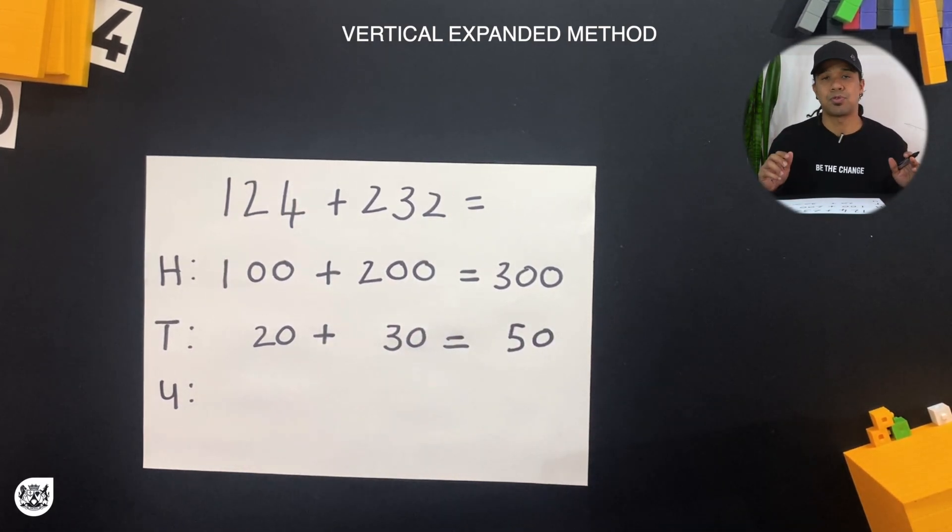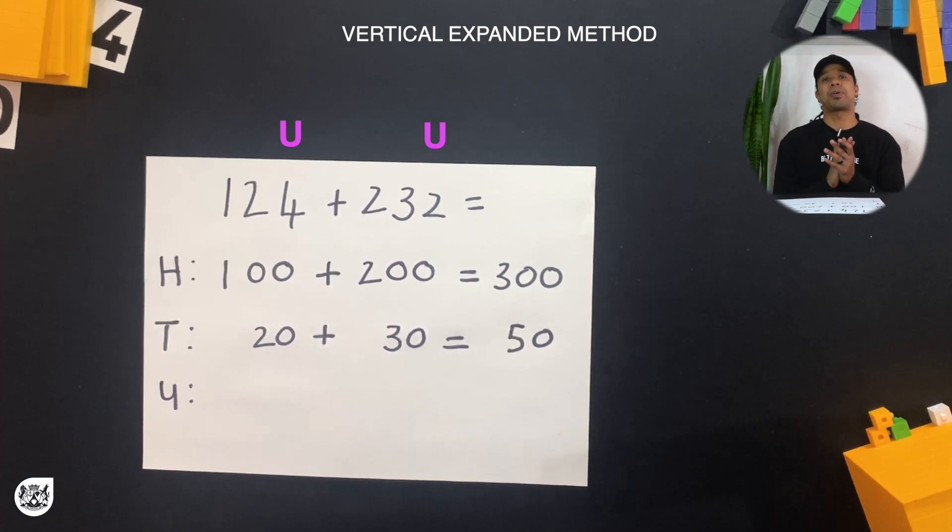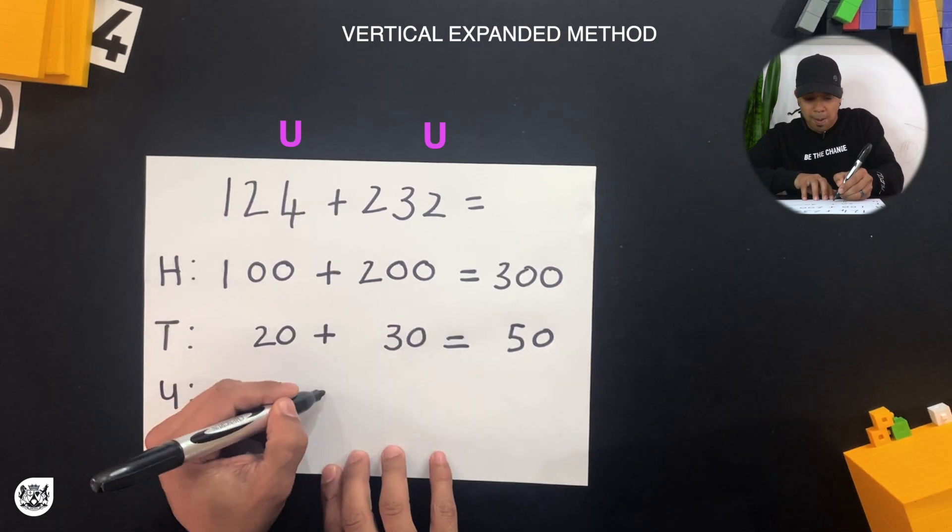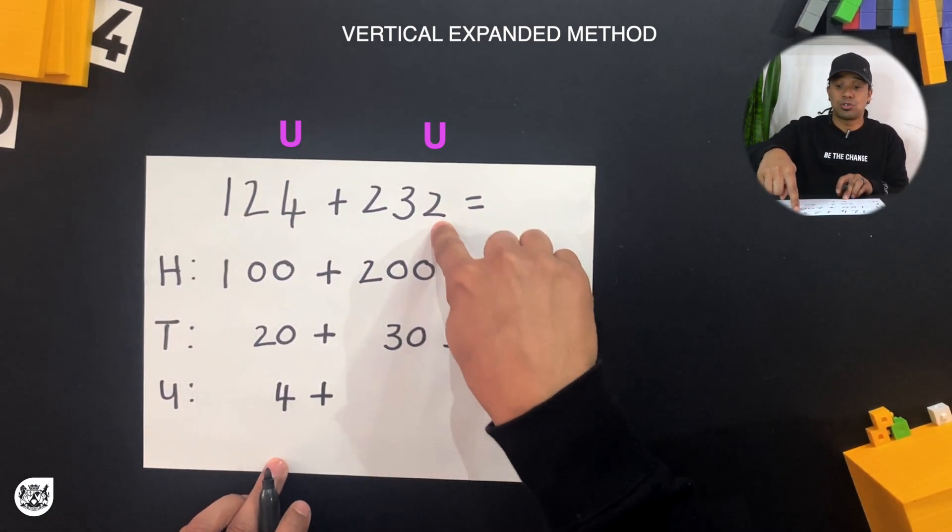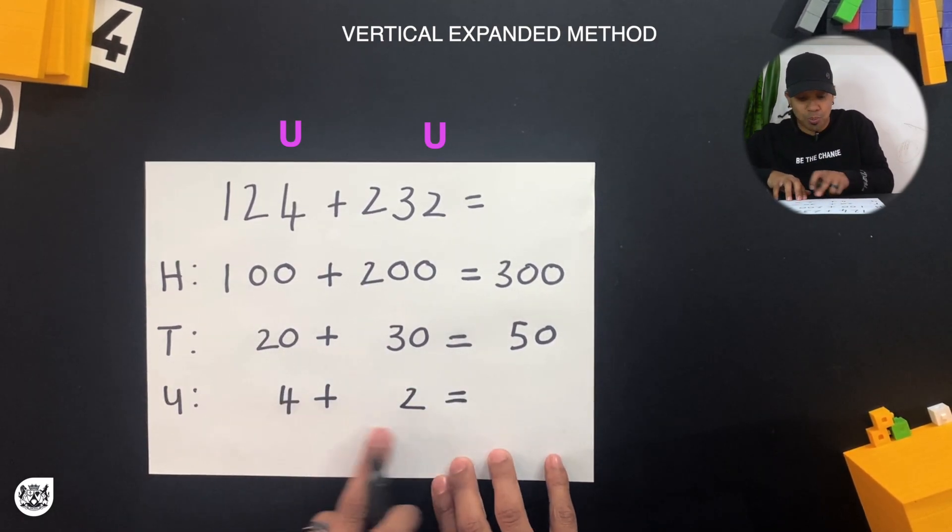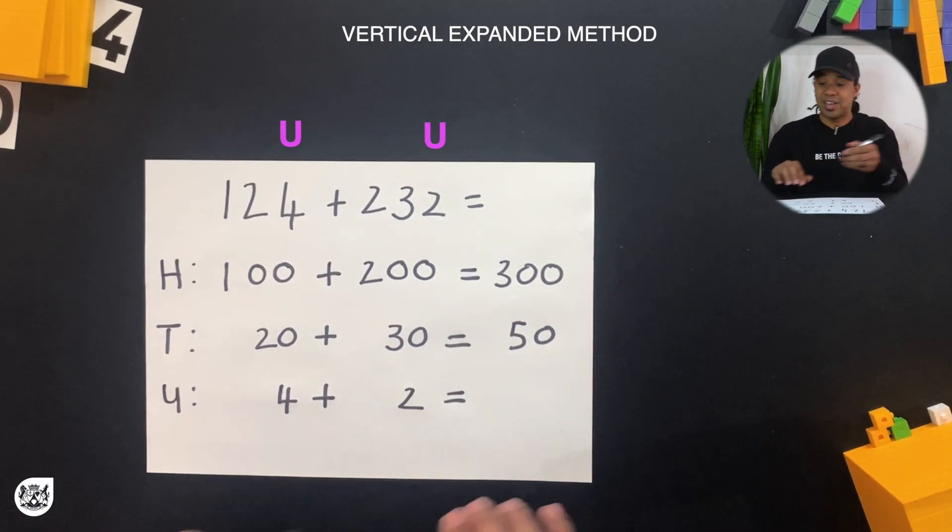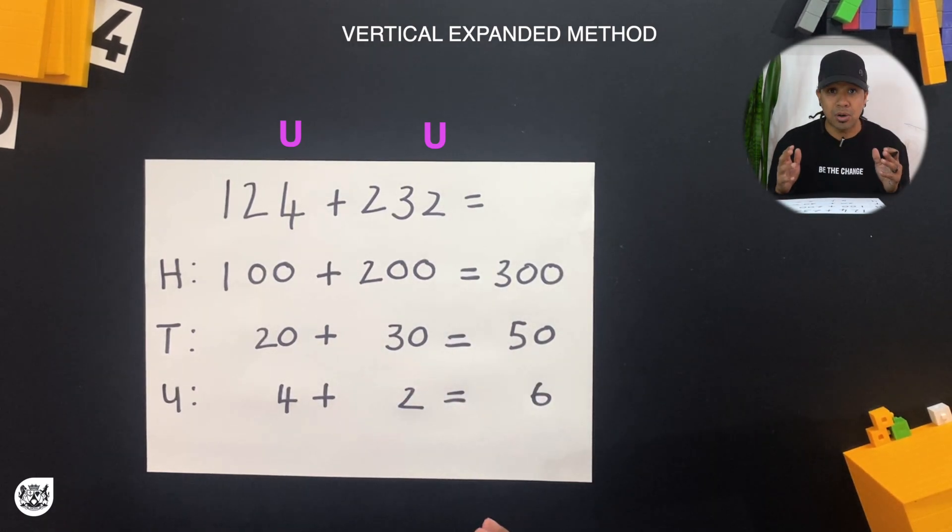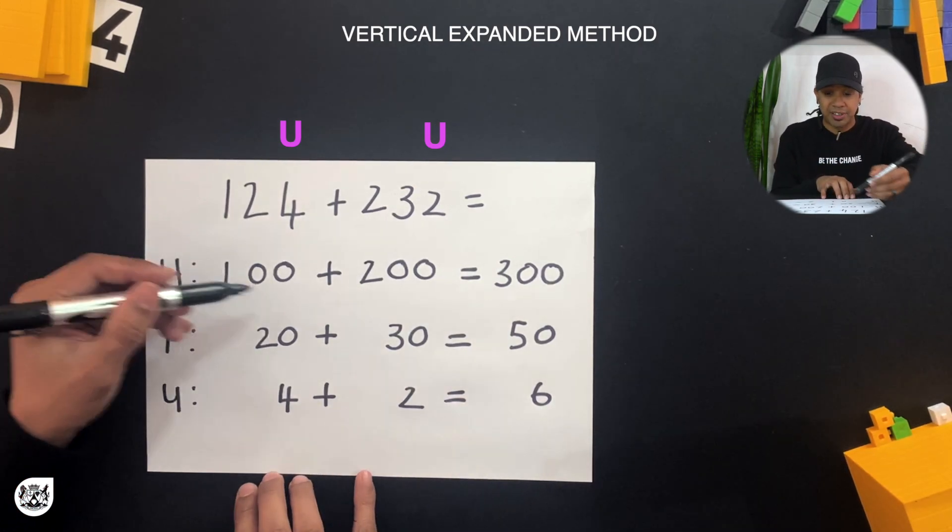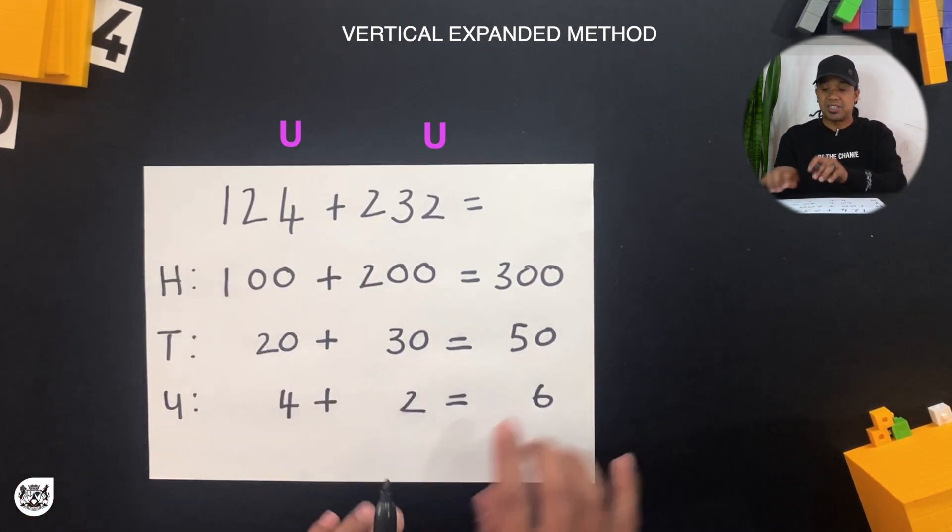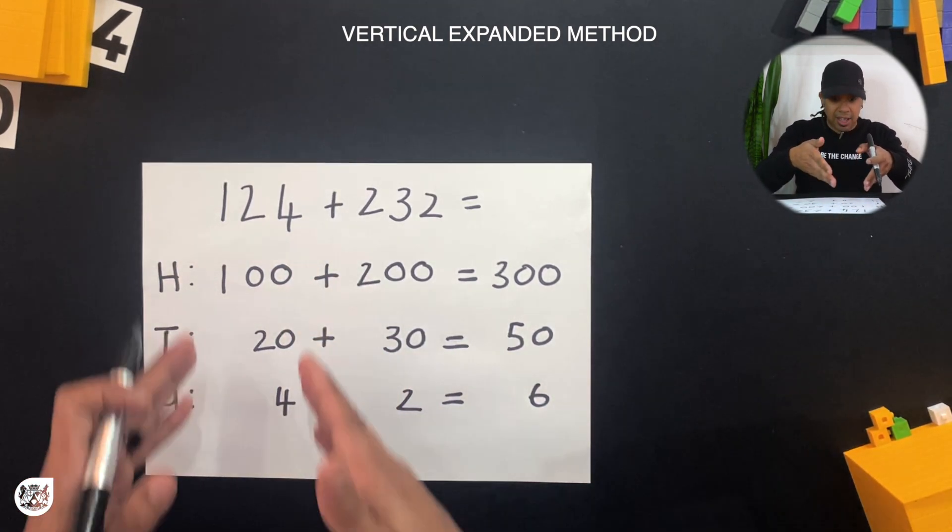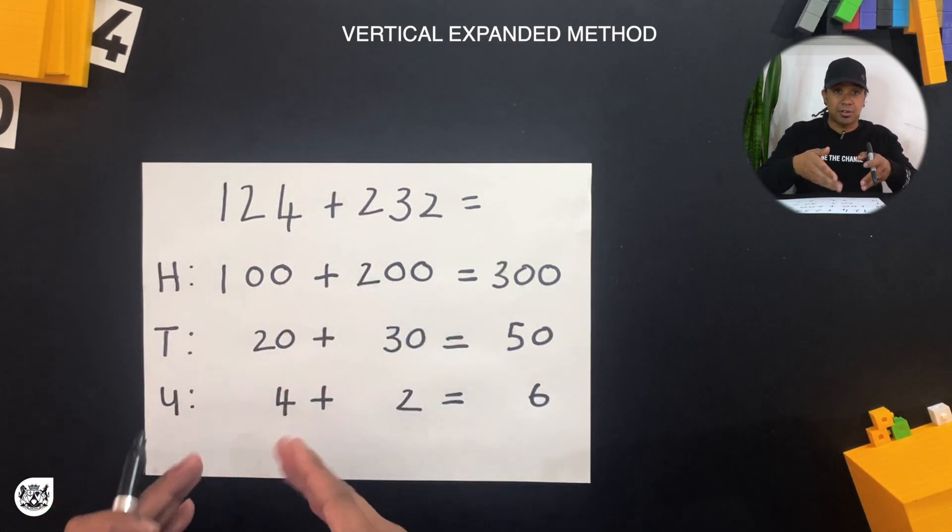Next up we're looking at the ones place. In the ones place here we've got a 4, and that's 4 plus 2. 2 is in the units place over here, plus 2, and this will give us 4 plus 2 is 6. There we go. All our place values have been written down. We've got 100 plus 200 is 300, we've got 20 plus 30 is 50, and we've got 4 plus 2 is 6.